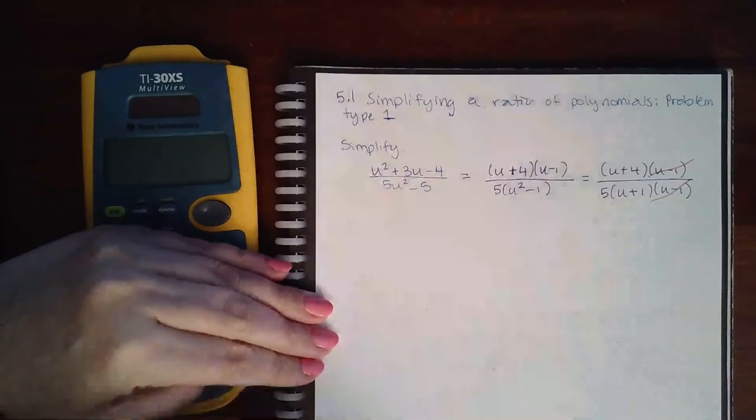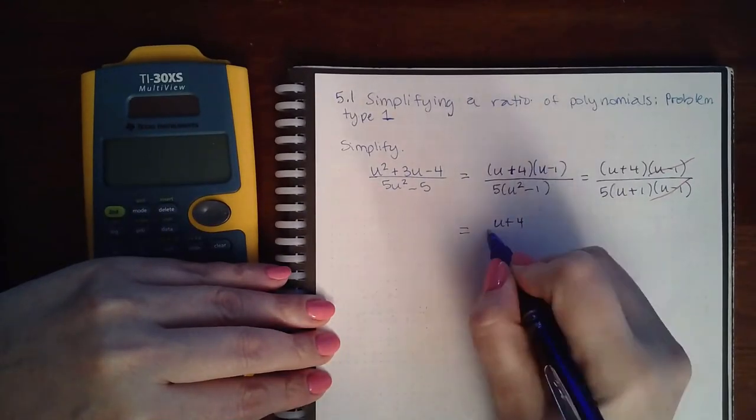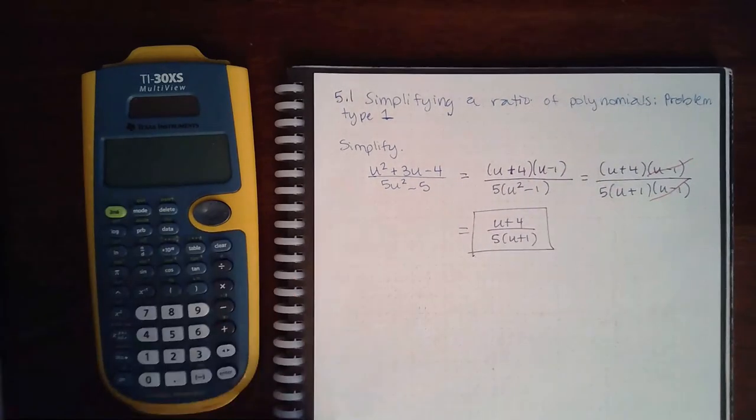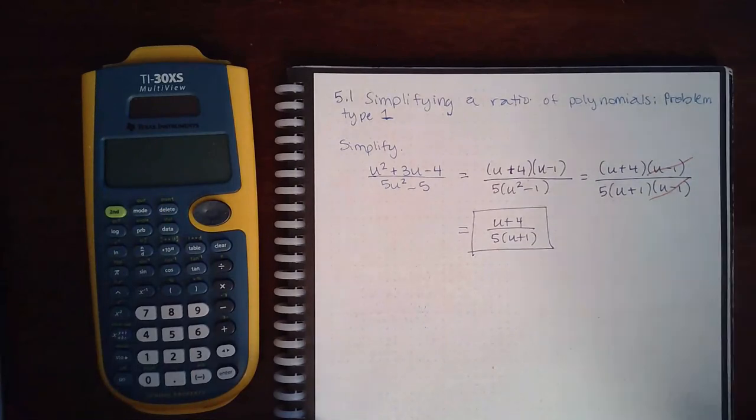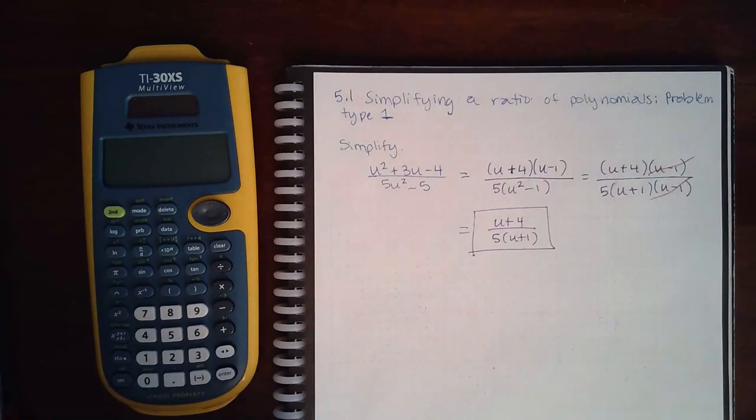Leaving me with u plus 4 over 5 times u plus 1. So you factor it accordingly, cancel what you can, and then simplify what you have left.